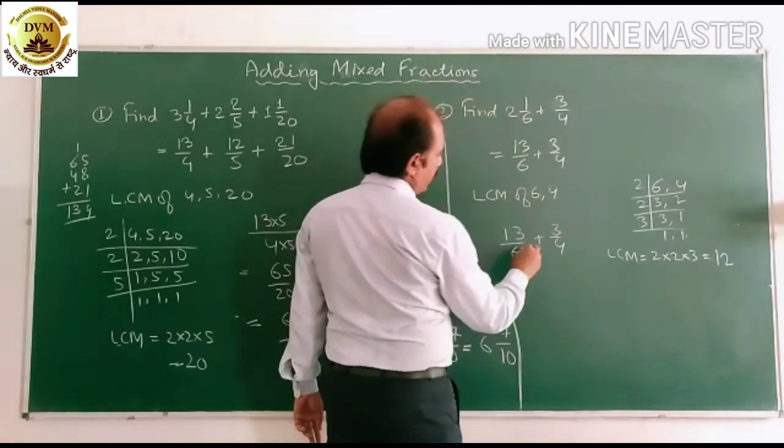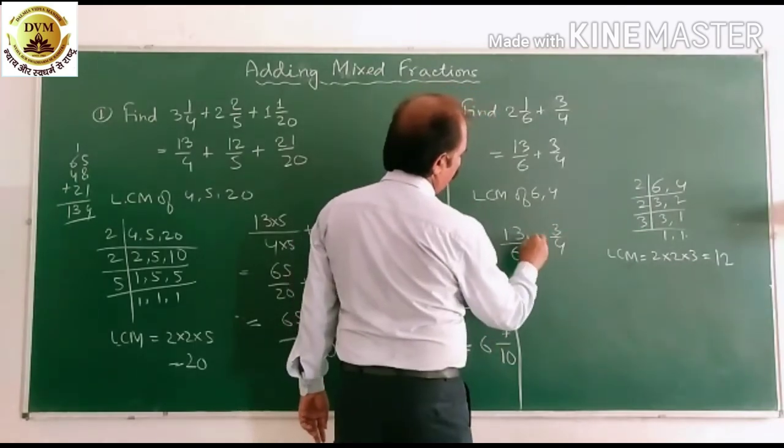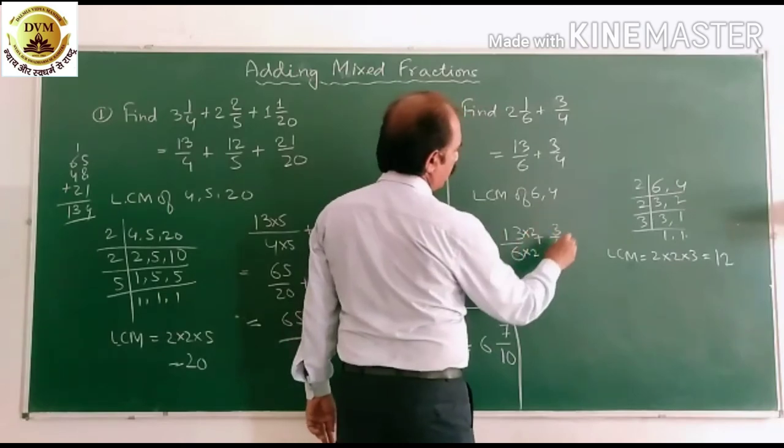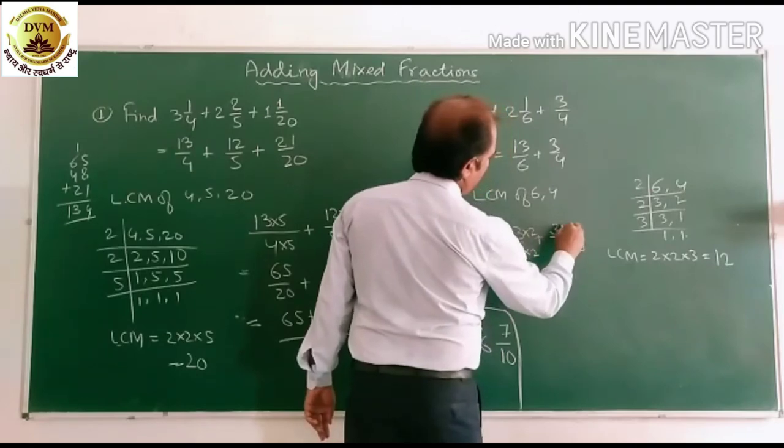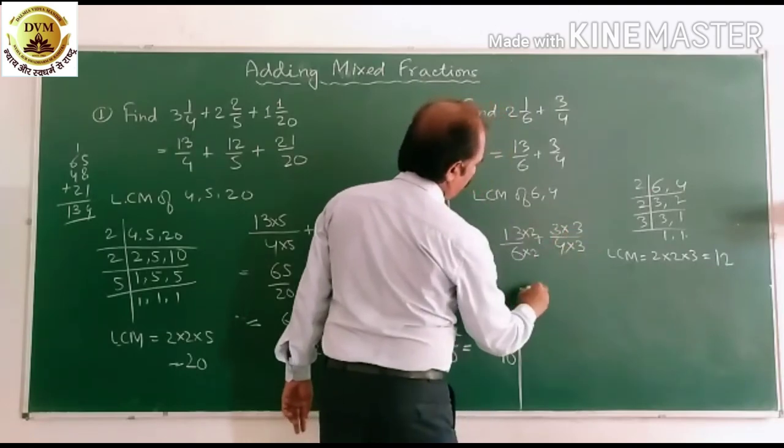So 13 by 6 plus 3 by 4. So you see this is multiplied by 2, this numerator is also multiplied by 2, this is multiplied by 3, this numerator is also multiplied by 3.